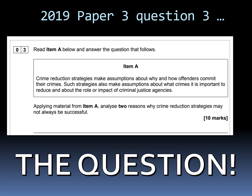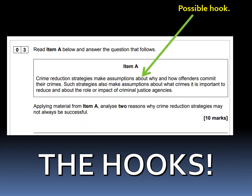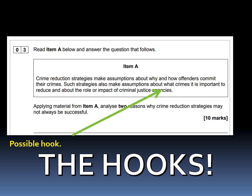This question wants you to apply material from the item and give two reasons why crime reduction strategies may not be successful. The question gives you what you need to be looking for in the item — specifically the word after 'two' that is in bold. We are looking for reasons why crime reduction strategies may not always be successful. Hook number one, our potential first reason: there are assumptions about why and how offenders commit crime. Hook number two, our potential second reason: there are assumptions about what crimes it is important to reduce.